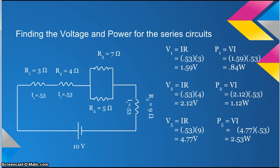To find the voltage and power in R1, R2, and R5, just use the equation V equals IR and P equals VI. For V1, use the current, which is 0.53, and multiply it by the resistance, which is 3. V1 is 1.59.